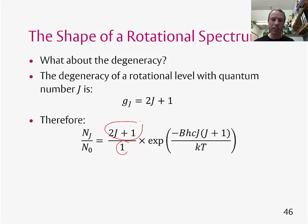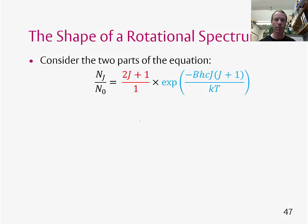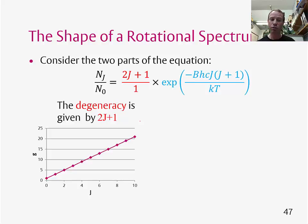We can now think a bit about what this function looks like, and we can do that by breaking it into two components. So we can have the degeneracy part, which I've drawn here in red, and the exponential part, which is in blue. So the degeneracy is given by 2J+1. So if we were to plot this degeneracy as a function of J, it would just be a straight line plot.